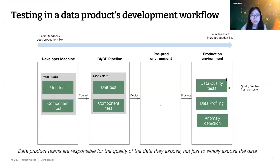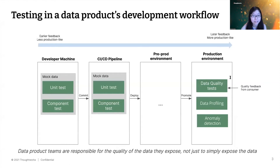Opinion alert: if you can only run this in one environment because of cost reasons or just starting out, I would recommend running it in production so that you're not running blind there. I've seen cases where this wasn't in place in production and people think everything's great — but there are still issues, detected much later by the data consumer through tickets or emails. It's much better for the data product team to detect issues themselves; it's going to improve the trustworthiness of the data.